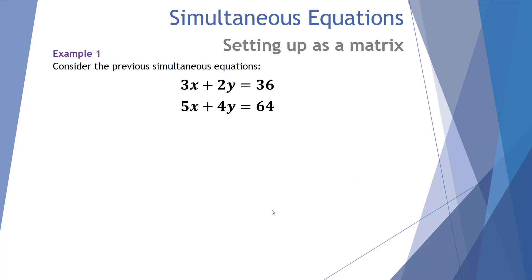This arrangement — multiple unknowns and multiple equations — is what we call simultaneous equations. So let's have a look at how we can use matrices to solve simultaneous equations. First of all we need to be able to go from a simultaneous equation to a matrix, and we need to be able to set them up correctly.